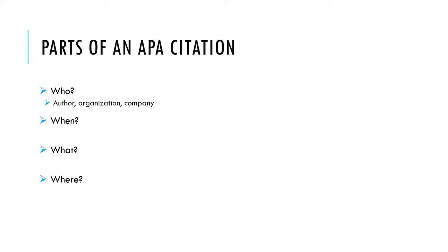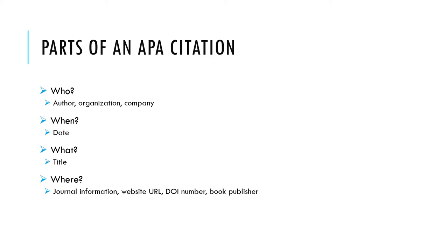Who is who wrote the source — this could be one or more authors, an organization or government entity, or even a company. When is when it was published — this can be a year or a full date, or you can write the letters ND if there is no date. What is what it's called — this is the title of the source or a description if there is no title. And where is where it's published — this might be the journal title, volume and issue number, the URL of a website, a DOI number (which is a specific web address given to journal articles), or the name of a book publisher and its location.